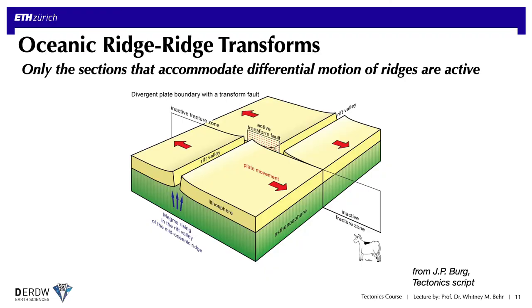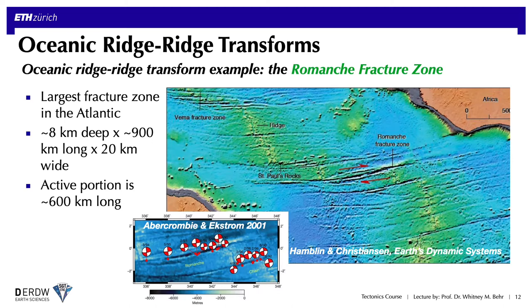The sections of the transform that are not accommodating shear — because they're moving in the same direction at approximately the same rate — are not active faults and are instead just fracture zones. The largest known transform and associated fracture zone is the Romanche Fracture Zone in the Mid-Atlantic. It's a very stark topographic feature on the seafloor, about eight kilometers deep, 900 kilometers long, and 20 kilometers wide. The active section of the transform is about 600 kilometers of that 900. The transform exhibits regular earthquakes with classic strike-slip simple shear focal mechanisms.